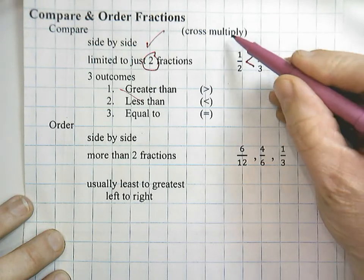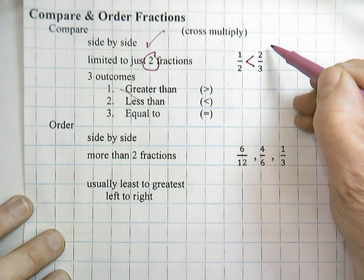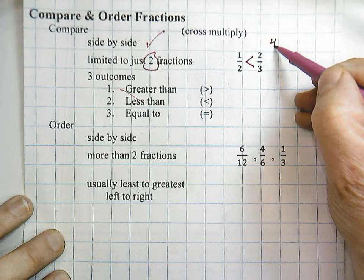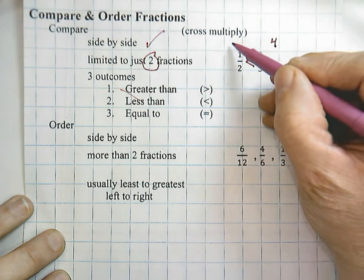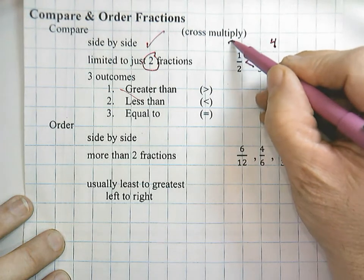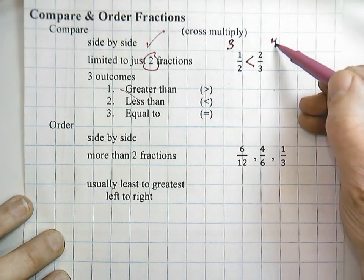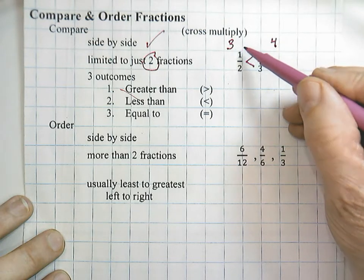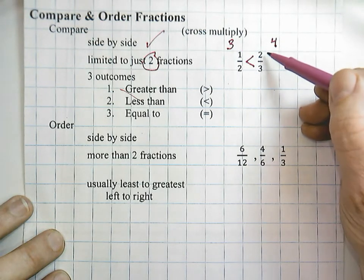I could use a cross multiplication strategy. Two times two is four, and three times one is three. When I compare, I can see that four is greater than three, so therefore two-thirds is greater.